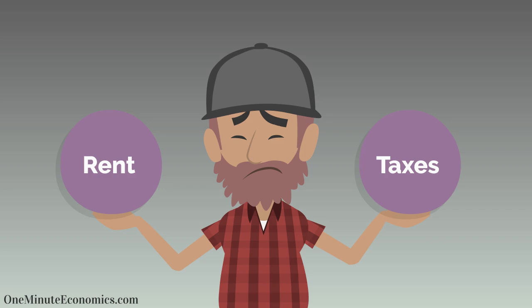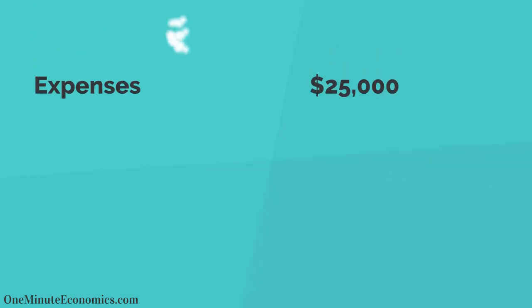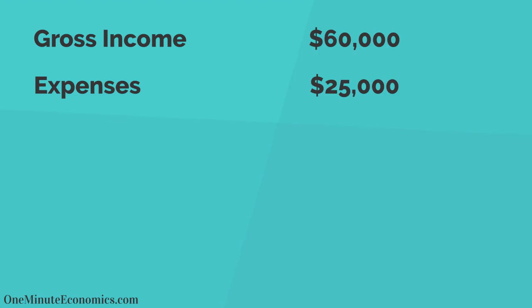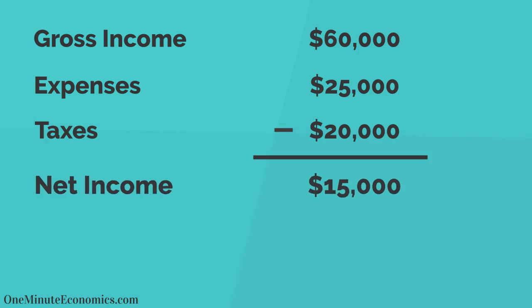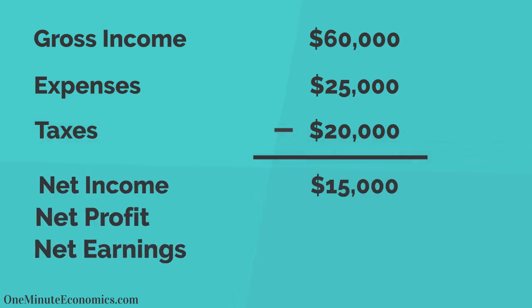Tom's business also has expenses such as rent that need to be paid. His expenses including rent amount to $25,000 yearly, whereas taxes amount to $20,000 per year. After subtracting the $25,000 in expenses and $20,000 for taxes, we are only left with $15,000, called the net income, net profit, or net earnings.